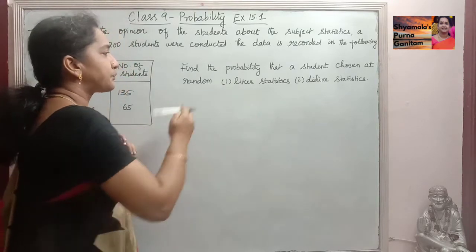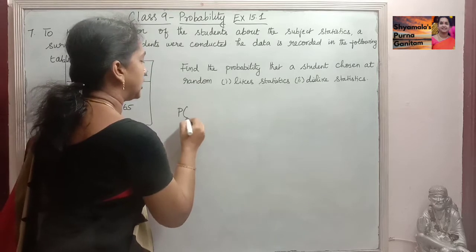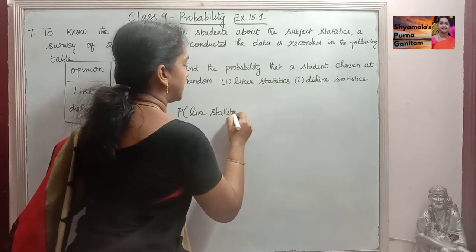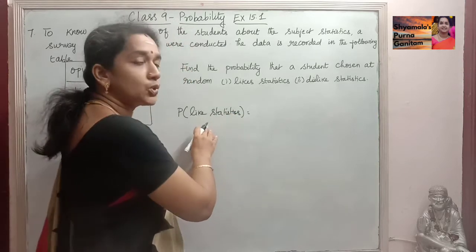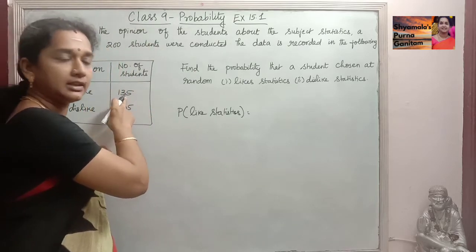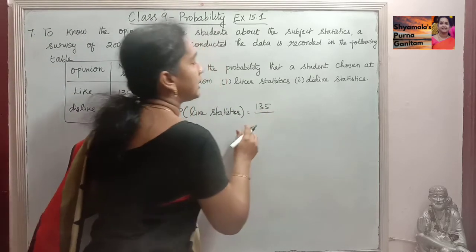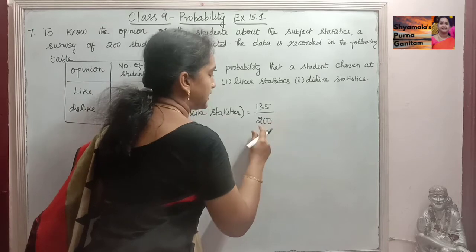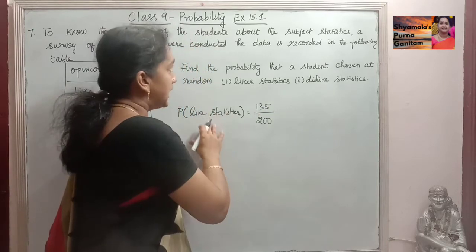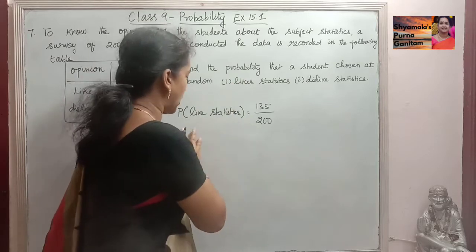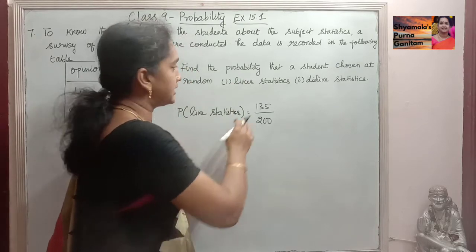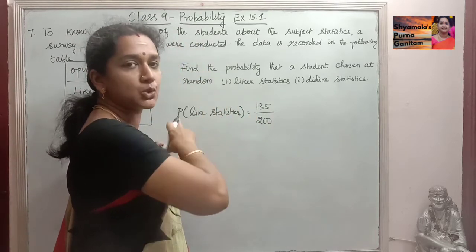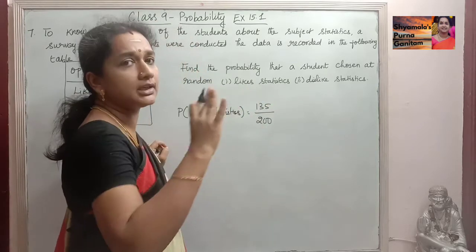We are asked to find the probability that a student chosen at random likes statistics and dislikes statistics. So we find the probability of students who like statistics. The number of students who like statistics is 135, divided by the total number of students, which is 200. So the probability of liking statistics is 135 by 200.